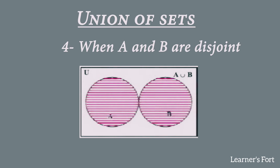The fourth case for union is when A and B are disjoint sets — no elements of A and B are common. We draw the two circles separately representing sets A and B, and we shade both areas to show A union B. Since there is nothing common between them, there is no overlapping between the two circles.